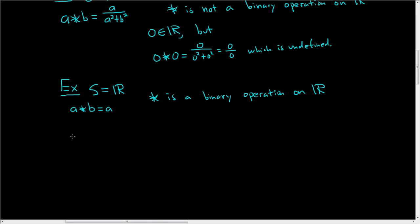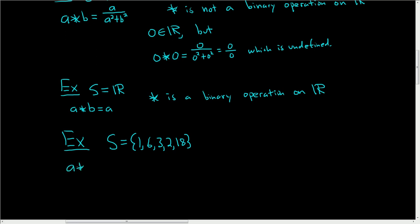Let's look at another example — something a little more interesting. We'll set S equal to the set containing the numbers 1, 6, 3, 2, and 18, and we'll define star as follows: given two elements in S, a and b, we'll star them and say that equals a times b — so the operation here is regular multiplication. The question is, is this a binary operation on S? No, it's not.